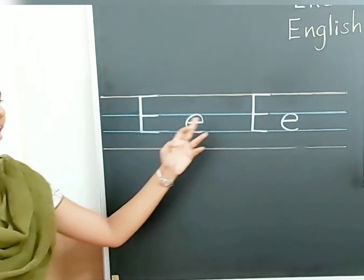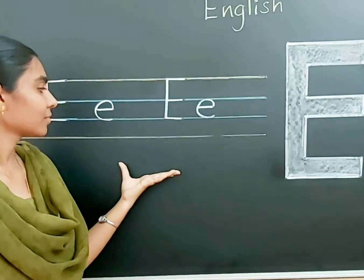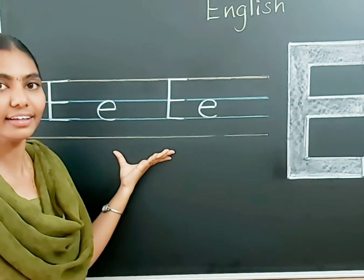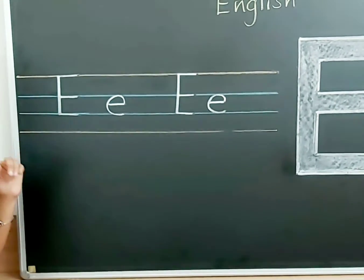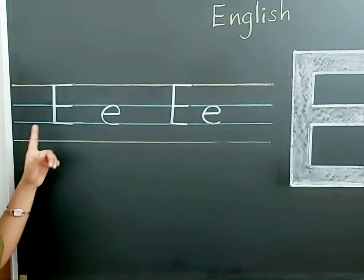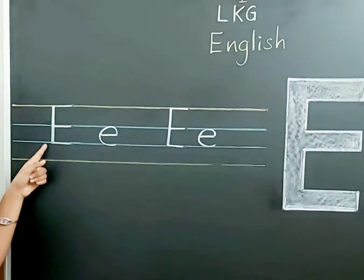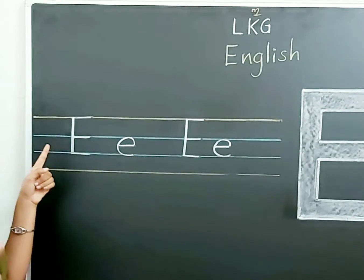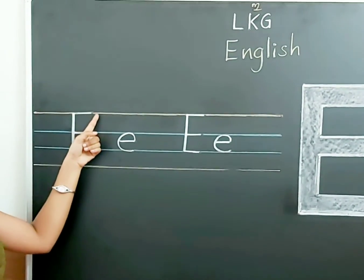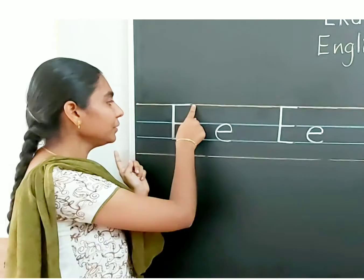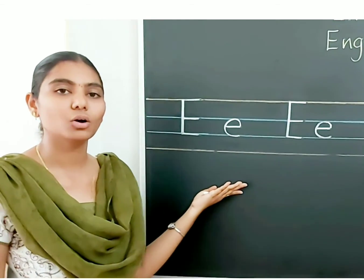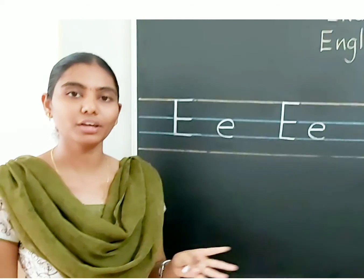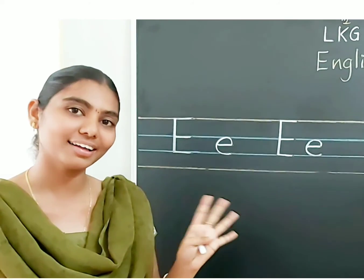Okay children, today we have learned how to write letter E. Always keep in mind: in capital E, one standing line and three sleeping lines. All of you practice letter E in your notebook. We will see you in the next class. Bye-bye.